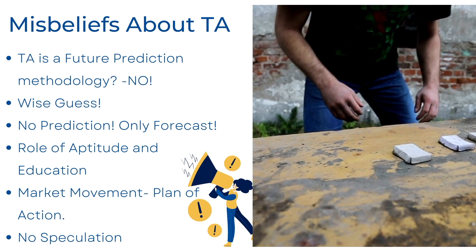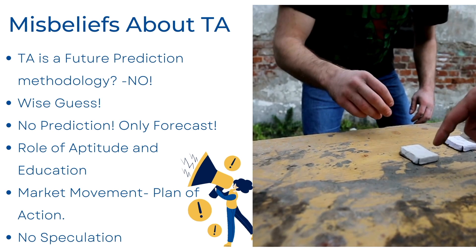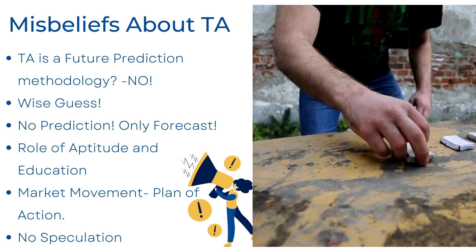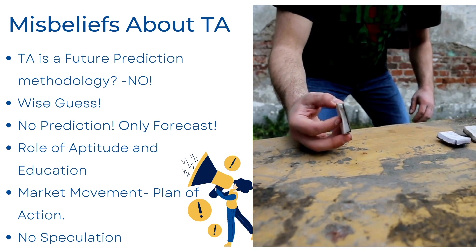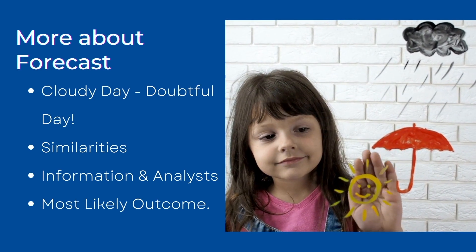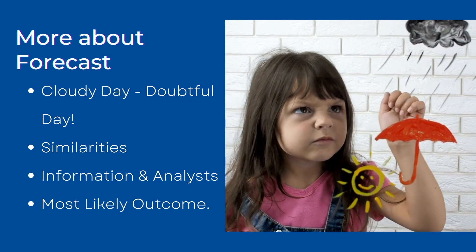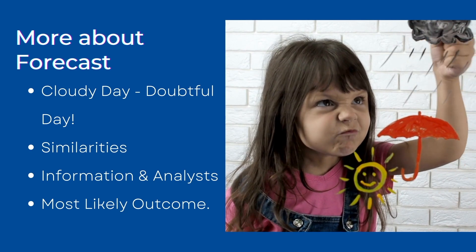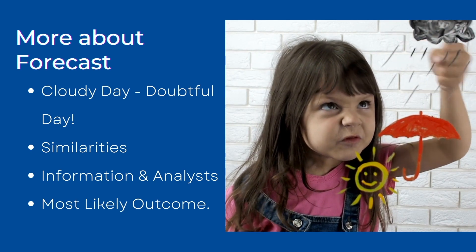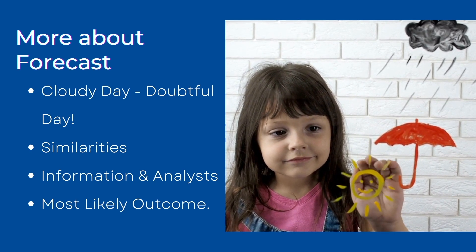Aptitude, education, and groundwork are very important. The market may move as expected — in the direction of our forecast — or it can move against our forecast. So we must have a plan of action to deal with market conditions. There is no speculation here; we are using present and past information and then taking action. To illustrate forecasting, imagine a cloudy day: you will be doubtful about rain. Cloudiness alone is not the deciding factor — it depends on the type of cloud, pressure systems, and weather patterns. This type of weather forecasting is similar to technical analysis.